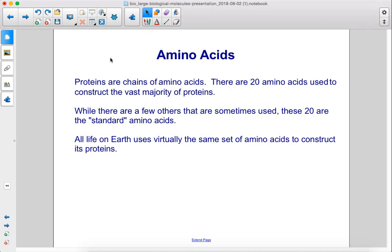Proteins are chains of amino acids. There are 20 amino acids used to construct the vast majority of proteins. While there are a few others that are sometimes used, these 20 are the standard amino acids. All life on Earth uses virtually the same set of amino acids to construct its proteins.